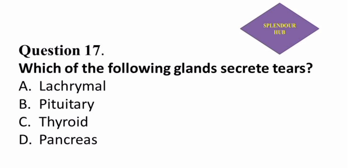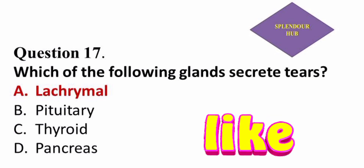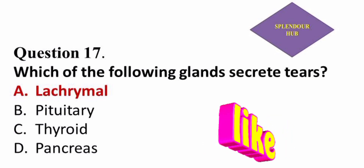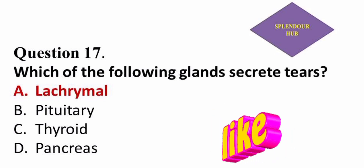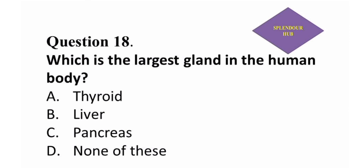Question 17: Which of the following glands secretes tears? — option A: lacrimal, option B: pituitary, option C: thyroid, option D: pancreas. Answer: The glands that secrete tears are lacrimal.